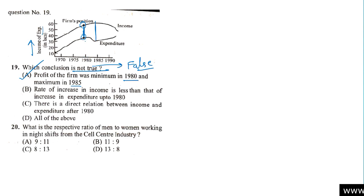Statement two: the rate of increase in income is less than that of increase in expenditure. You can see that up to 1980, the income increment rate is less than the expenditure increase rate, and after that it drops. So this statement is also true.